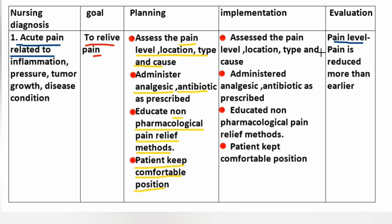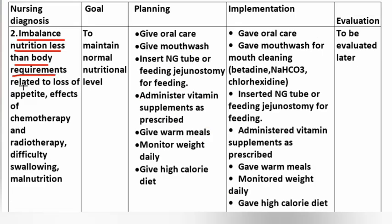Nursing diagnosis number 2 - Imbalanced nutrition, less than body requirements, related to loss of appetite, effects of chemotherapy and radiotherapy, difficulty in swallowing, and malnutrition. Goal: to maintain normal nutritional level.